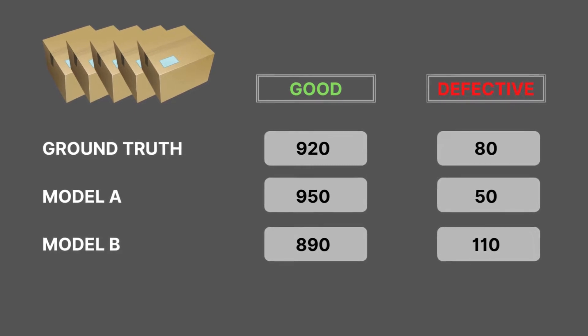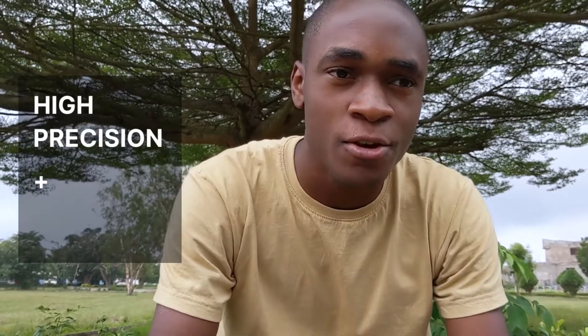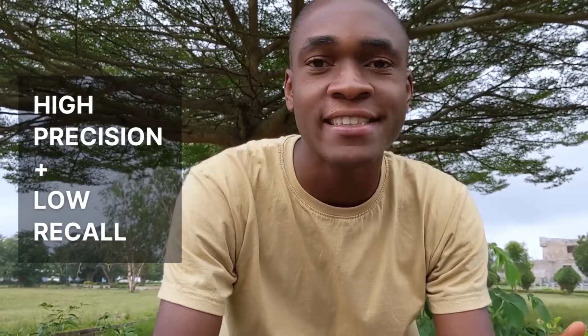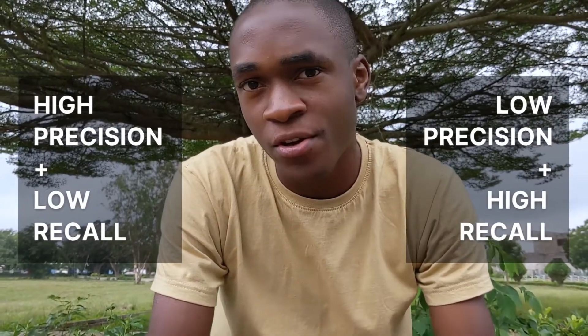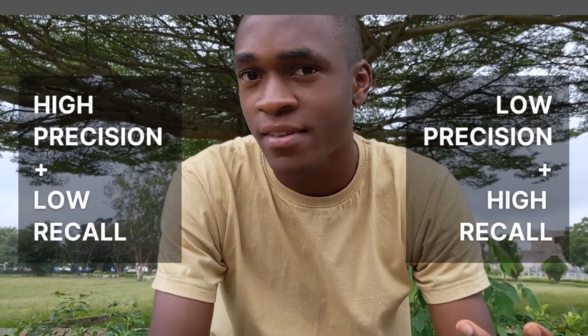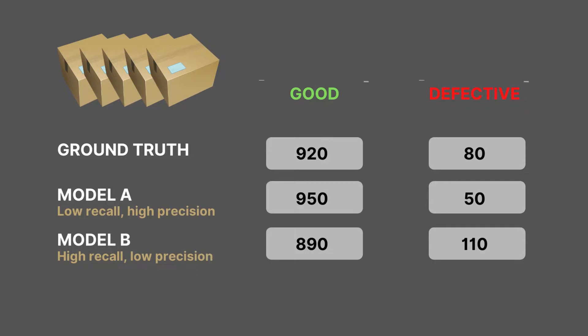From the results you're able to derive, you discover that one algorithm has high precision and low recall, and the other has low precision and high recall. Specifically, Model A has low recall and high precision, while Model B has high recall and low precision.